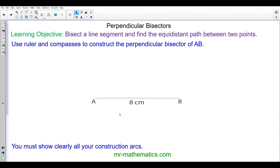Hello and welcome to our lesson on creating perpendicular bisectors. To create a perpendicular bisector we need a pair of compasses and I'm going to put the compasses on one end of the line.